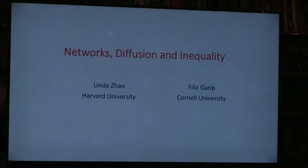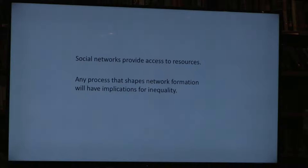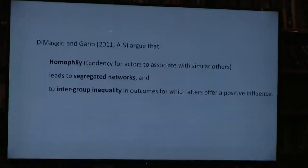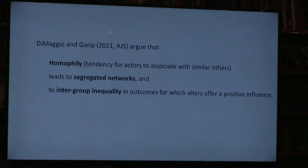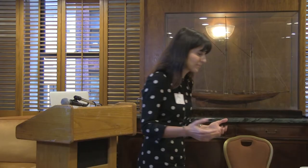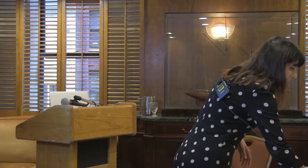We have a simple idea in this paper. We know that social networks provide access to resources, so anything that affects network formation will have implications for inequality. This simple idea was the basis for our earlier paper with Paul DiMaggio. In that paper, we focused on homophily—the tendency of actors to associate with similar others—and we argued that homophily tends to lead to segregated networks.